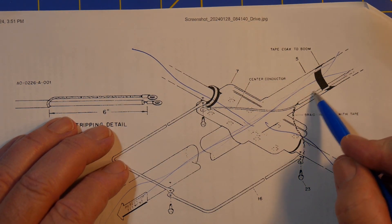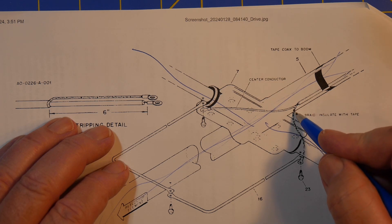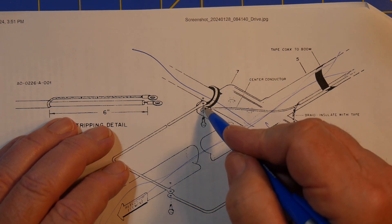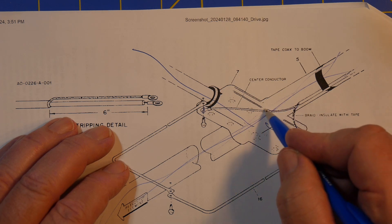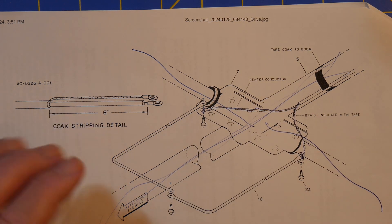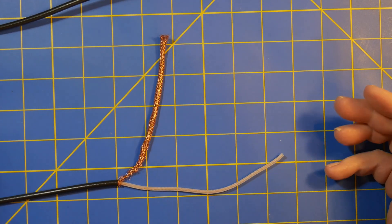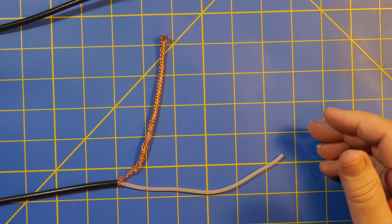And the coax is coming in here with the braid, six inches over to here. And the center conductor, six inches over to here, which looks like this. Let's go back out a little bit. I did this just to see if I could do this.